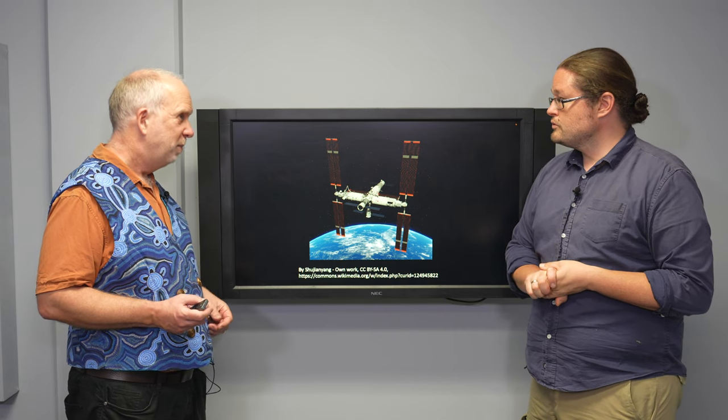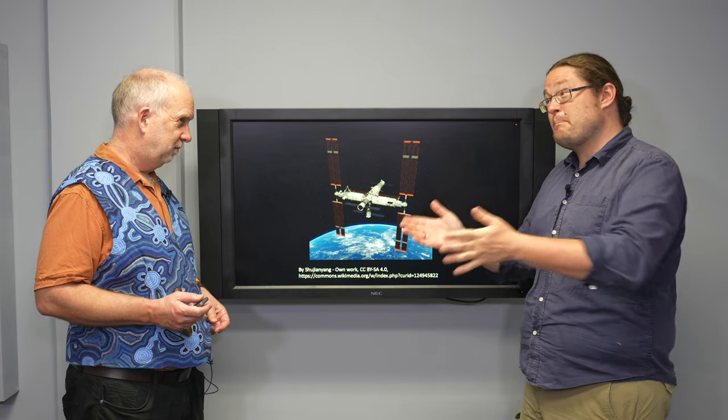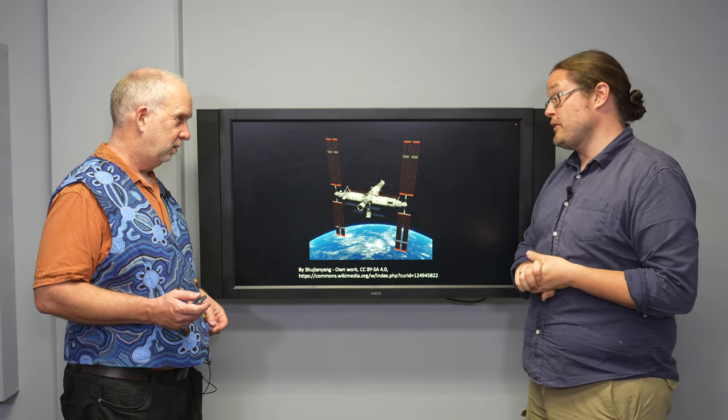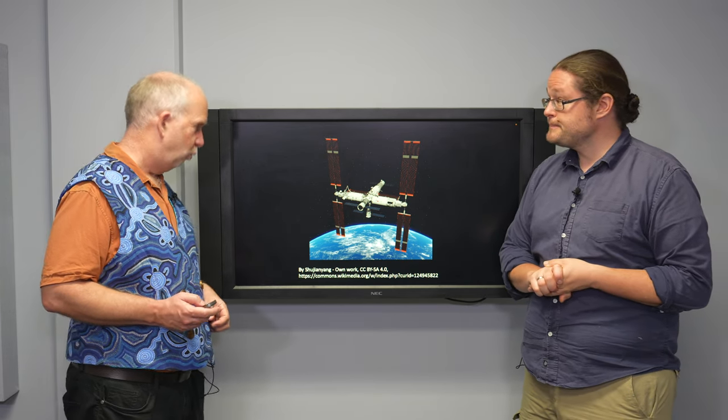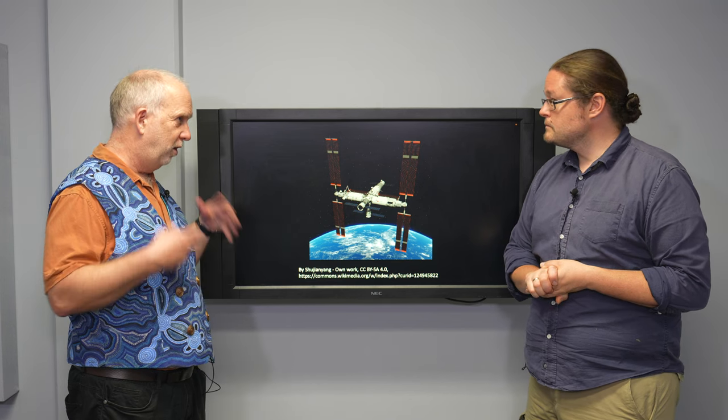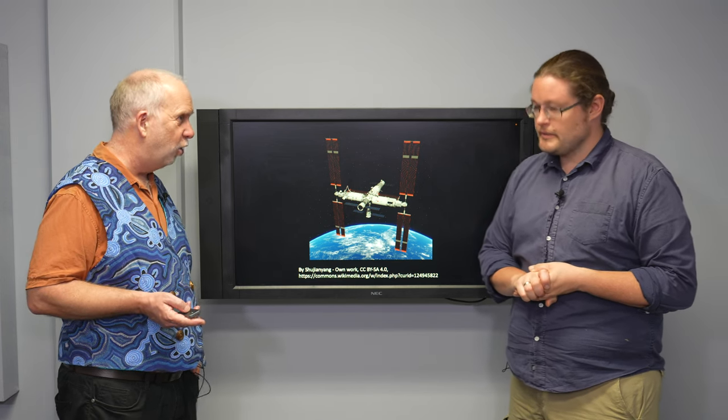The Chinese also have their Tiangong Space Station, which is basically very similar and a bit smaller. A bit smaller, but a bit bigger than actually the first U.S. and Russian ones. It's part of a series of these things that the Chinese have launched. And so between the two, there is a permanent human presence in low Earth orbit.